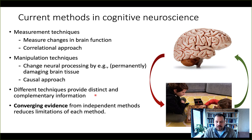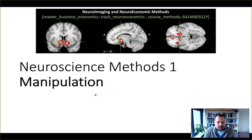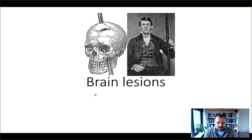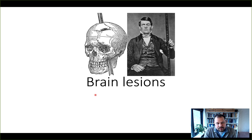Let's talk about some manipulation techniques. The first one is brain lesion studies. This is showing a picture of Phineas Gage, which is a very famous story that comes up in almost every introductory psychology textbook. He was a highly intelligent person who was helping build railways in the early days of the United States.